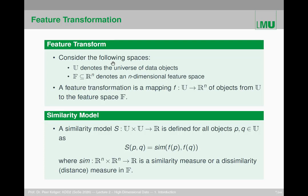We have some universe of data objects — this is our raw data, maybe images or text or some unstructured data — and we want to transform those representations into a different representation, which is a feature space. In the best case, it's a table of real values, so the columns are real values. So it's R to the power of M, the feature space, the real vector space. And we're looking for this feature transformation, which is a mapping from the universe of the original raw data to this feature space.